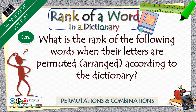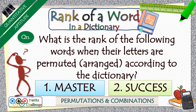Hi and welcome to IPM LEAP. In today's video lesson, we are going to discuss a concept from the chapter permutations and combinations: how do we find the rank of a given word when all its possible permutations are arranged in dictionary order? As examples, we will discuss the ranks of the words master and success.